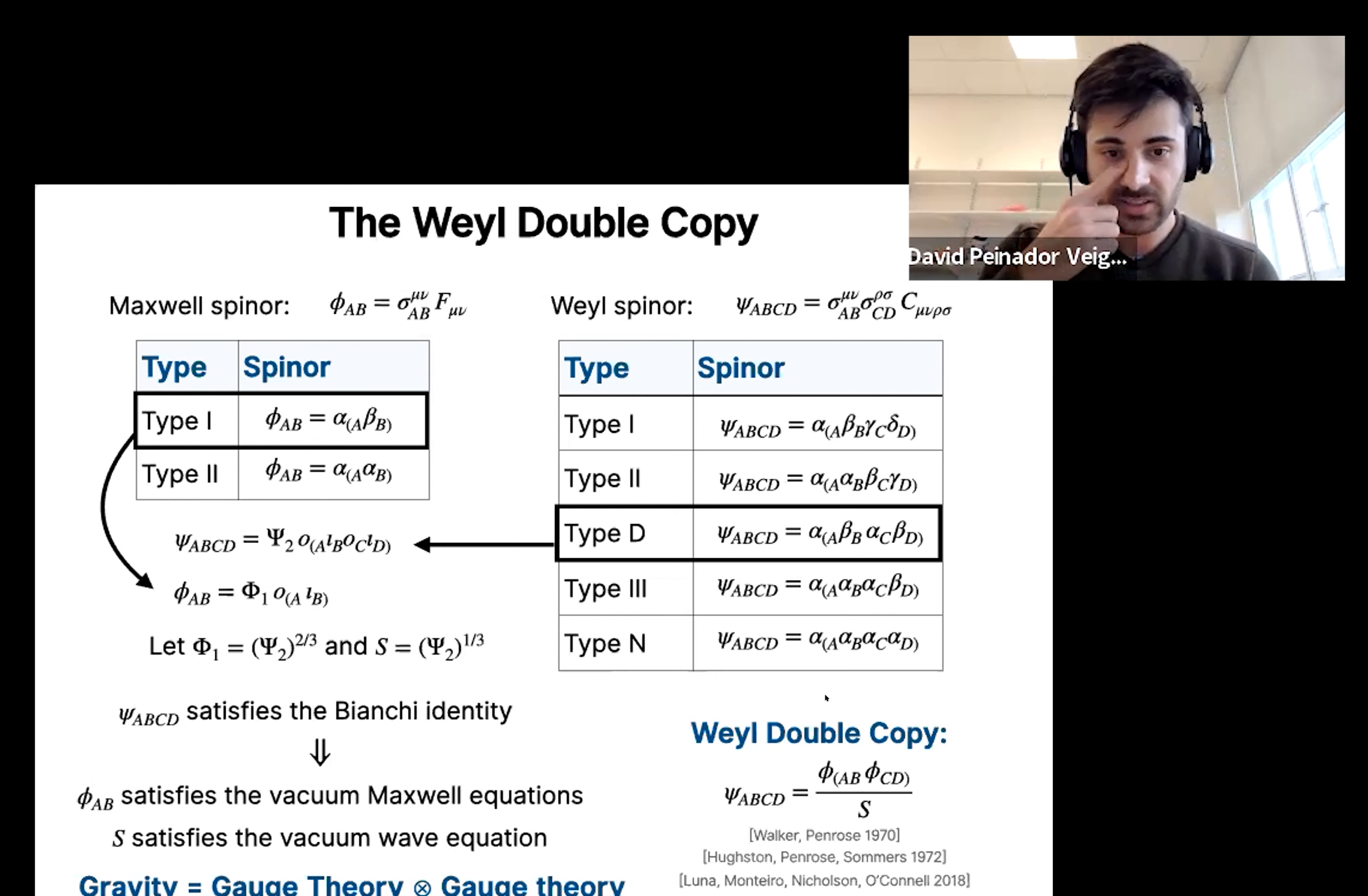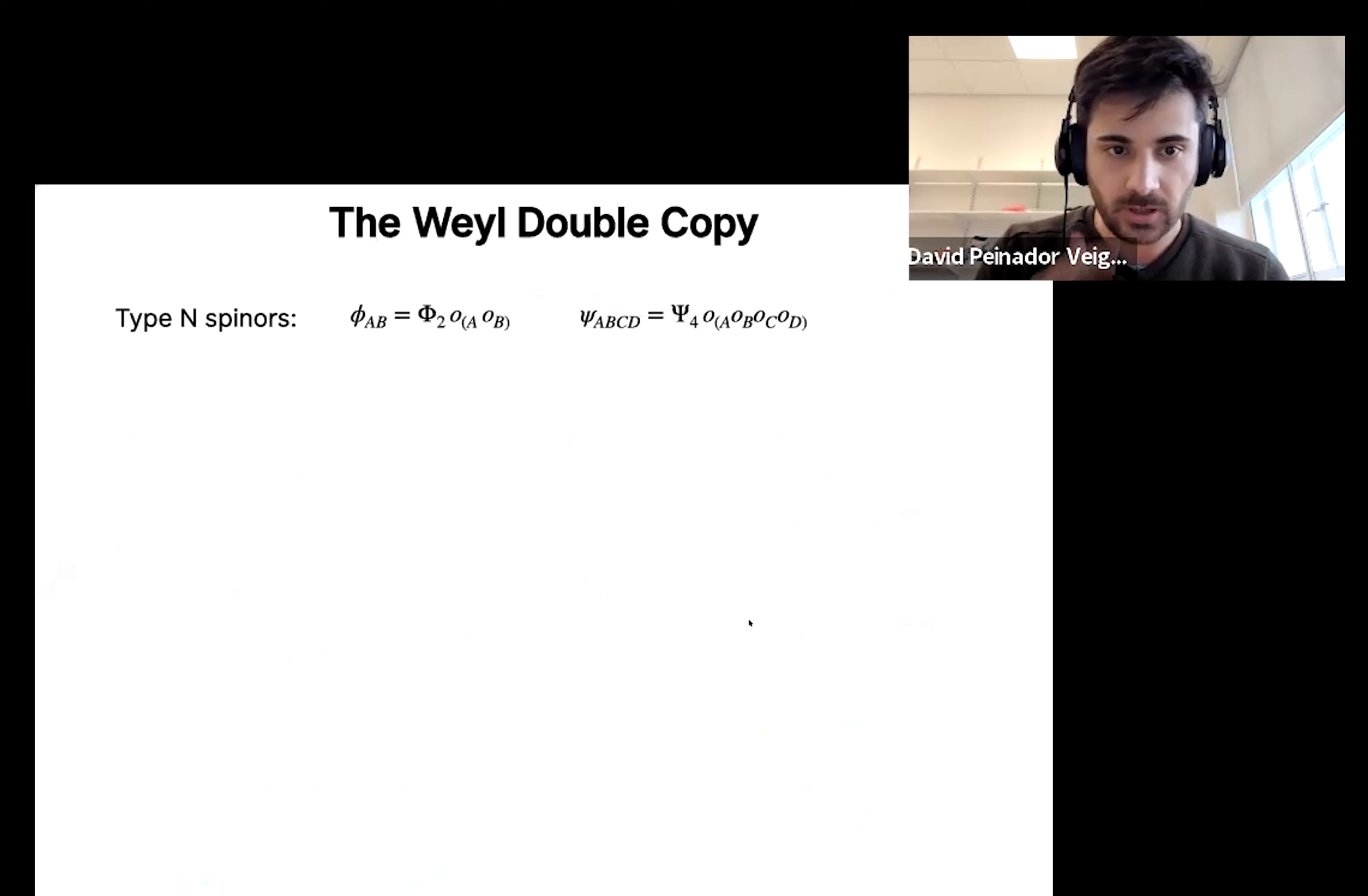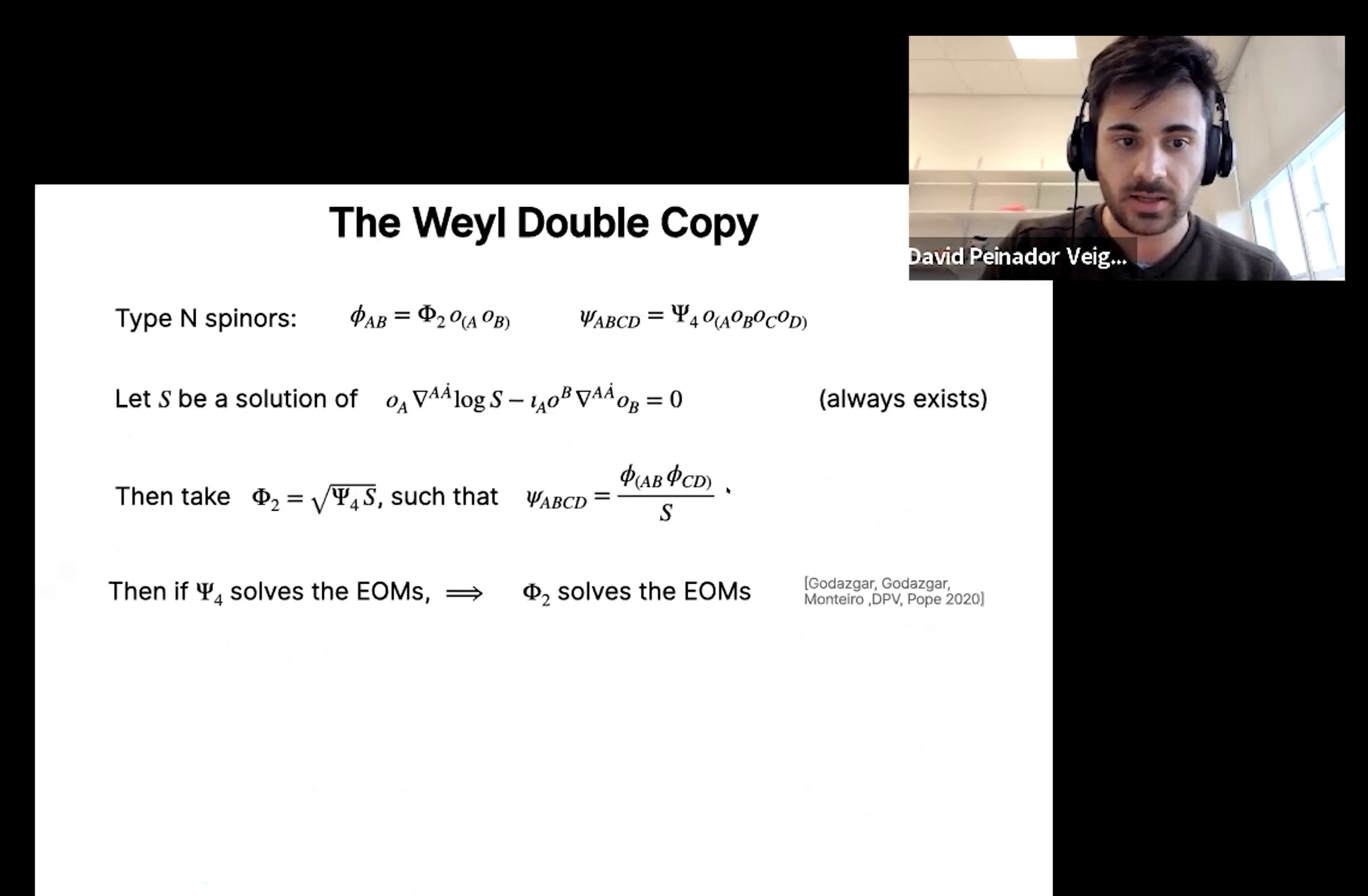But this was known already from 2018, but you can ask something else. Notice that for type N spacetimes, we kind of have a similar thing with type II Maxwell spinors. Again, it's like a double copy. So that's what we've done. If you take type II Maxwell spinors and type N Weyl spinor and you take s to be a solution of this equation, which always exists, then you have the same thing. If you define ψ_2 to be the square root of ψ_4 times s, you can still write ψ as this combination. And again, if ψ_4 solves the equations of motion, you have a φ_2 that automatically solves the Maxwell equations.